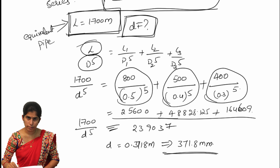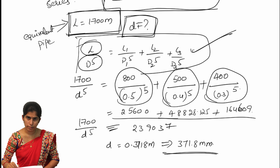So 371.8 mm is the equivalent pipe diameter they asked us to find. This is a very simple problem — using the Dupuit formula we can easily find the answer. We just need to remember the formula: L over D to the power 5 equals L1 over D1 to the power 5 plus L2 over D2 to the power 5 plus L3 over D3 to the power 5. Knowing the compound pipe and equivalent pipe dimensions and substituting the known values, we get the diameter as 371.8 mm with a length of 1700 meters.